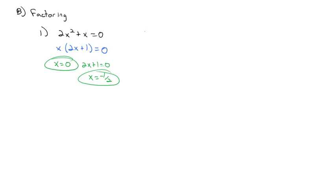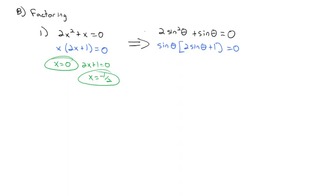We can do the same thing with trig — just replace x with sine of theta. Given 2 sine squared theta plus sine theta equals 0, there's a common factor of sine of theta. Factoring it out leaves sine of theta times 2 sine theta plus 1 equals 0. Setting each factor equal to 0: sine theta equals 0, or sine theta equals negative one-half.